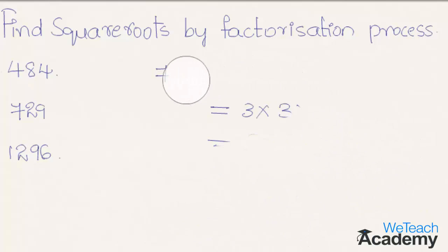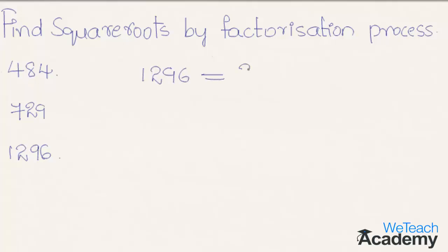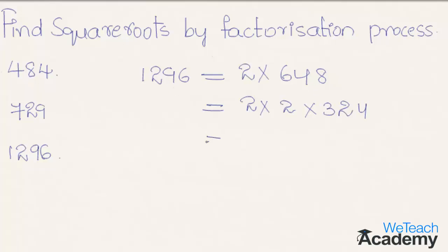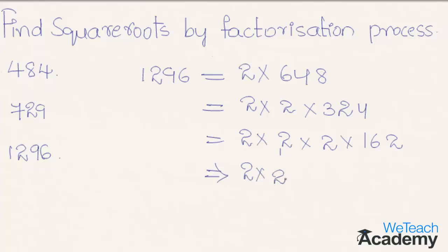Now let us find the square root of 1296. This can be written as 2 × 648, then as 2 × 2 × 324. Here 2 × 324 is 648. Again the given number can be written as 2 × 2 × 2 × 162. Here 2 × 162 is equal to 324. Now again we can write this as 2 × 2 × 2 × 2 × 81.